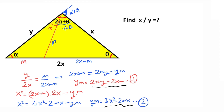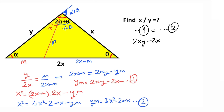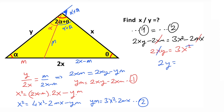Notice that the first and second equations are equal, so equalizing them: 2xy minus 2xm equals 3x squared minus 2mx. These terms cancel, leaving 2xy = 3x squared, so 2y = 3x, which means x over y equals 2 over 3. Thanks for watching! If you want more videos like this, please don't forget to like and subscribe to my channel. Take care and bye!